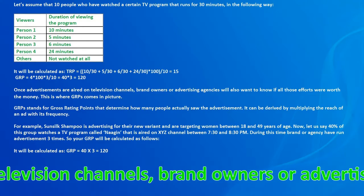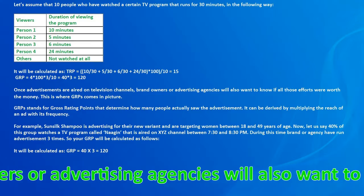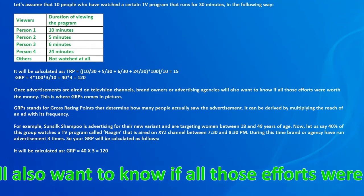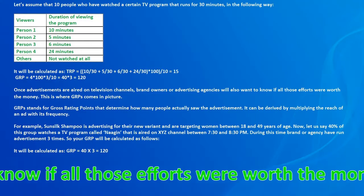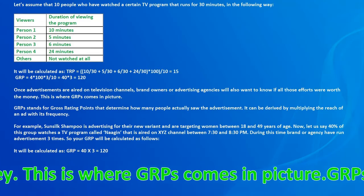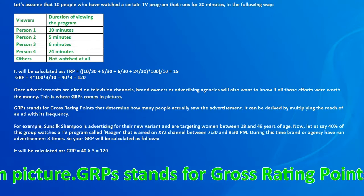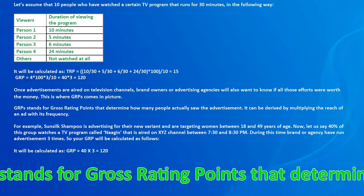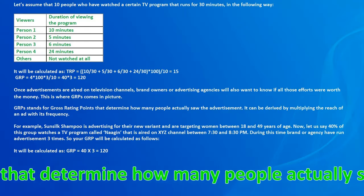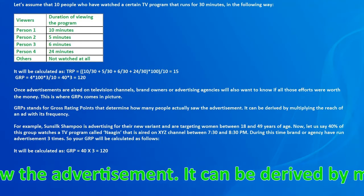Once advertisements are aired on television channels, brand owners or advertising agencies will also want to know if all those efforts were worth the money. This is where GRPs come into the picture. GRP stands for Gross Rating Points, which determines how many people actually saw the advertisement.